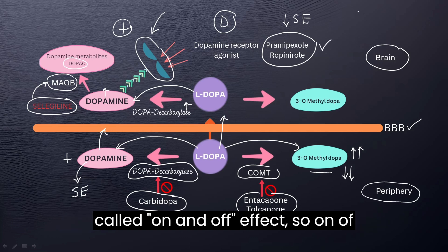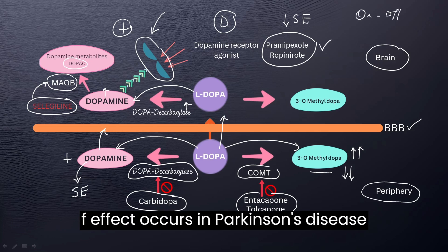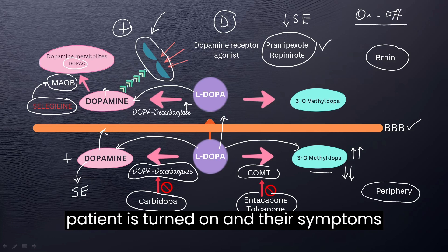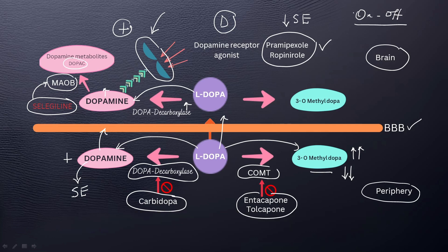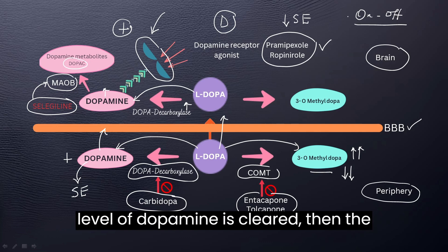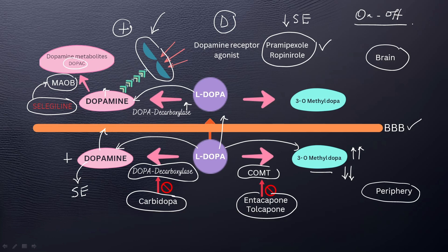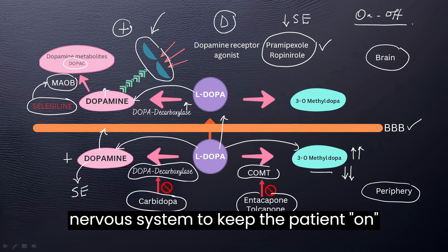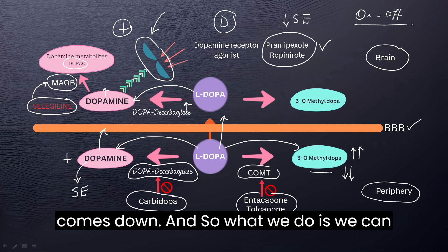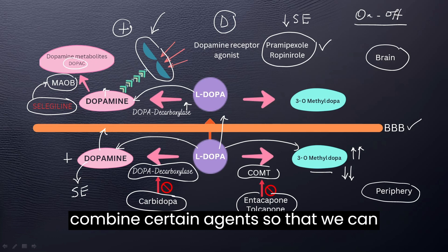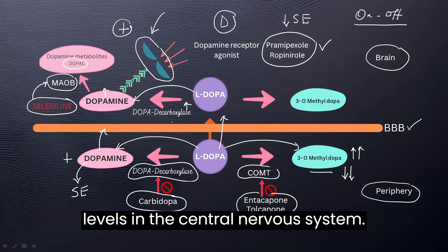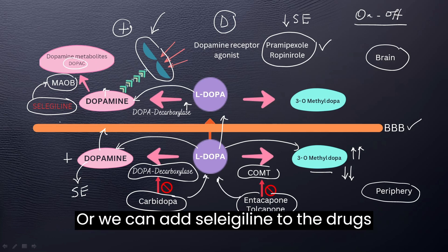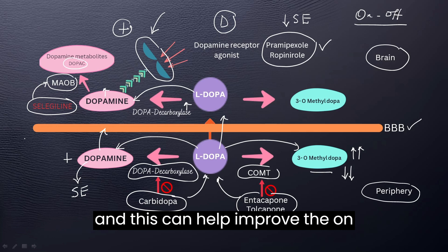I want to talk about the on-off effect, which occurs in Parkinson's disease — also called fluctuations. When you give the patient L-dopa, the patient is turned on and their symptoms improve. But when the dosage wears off or dopamine is cleared, the patient is turned off, meaning there isn't a steady enough level of dopamine in the CNS to keep the patient on all the time. So we can combine certain agents — for example, carbidopa and entacapone with L-dopa, or add seligiline — to maintain a steady state of dopamine levels and improve the on-off effect.